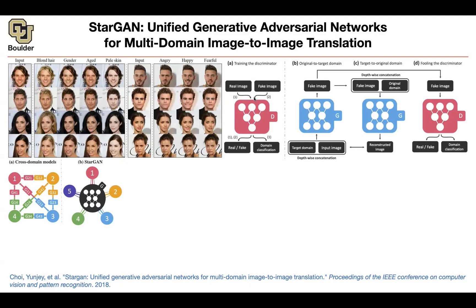A real image goes in, a fake image goes in — you're a discriminator, which is a neural network. That's going to give you two objectives. One is: is it real or is it fake? Discriminate between real and fake. At the same time, tell me what domain you're classifying — are you classifying blonde hair, gender, age, pale skin, et cetera?